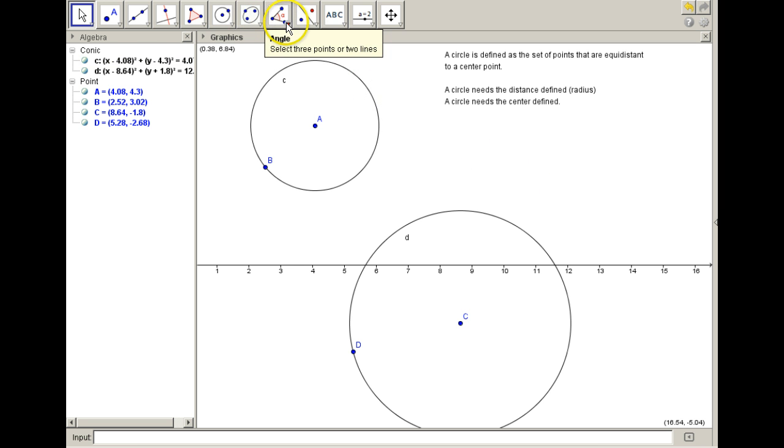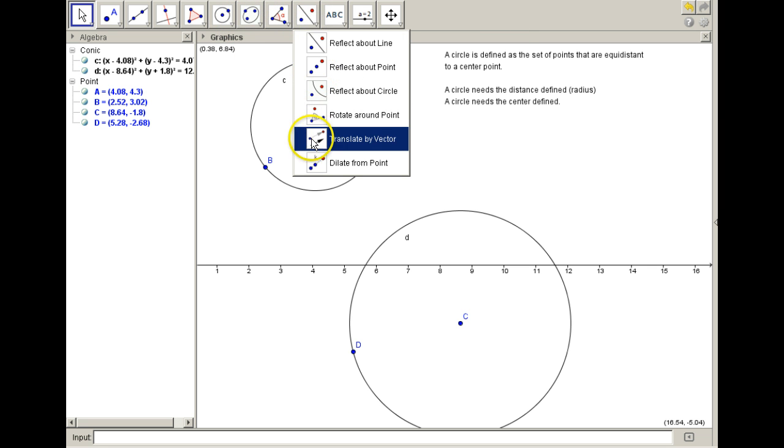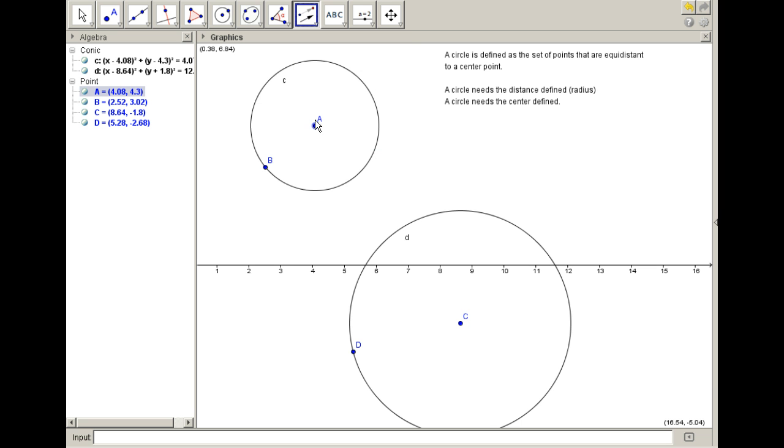So we'll begin by making a rigid transformation. So I'm going to go to my transformations here. It says translate by vector. I want to do a translation. Oh boy, let's try that again.